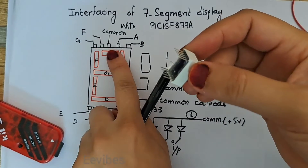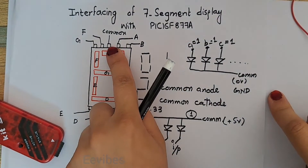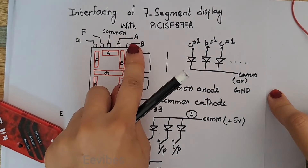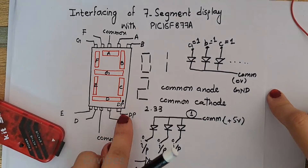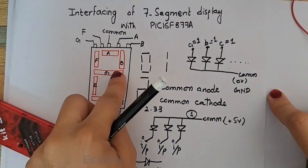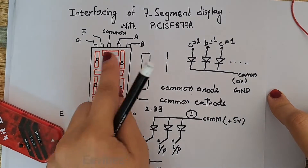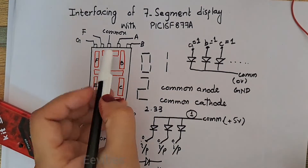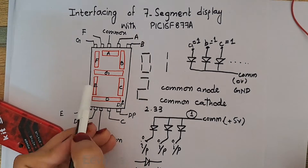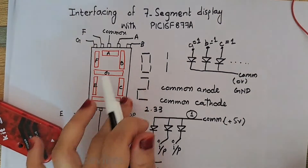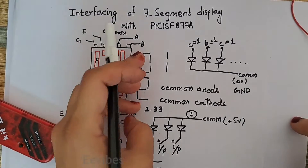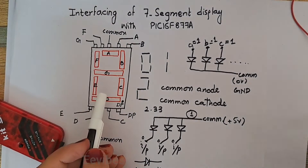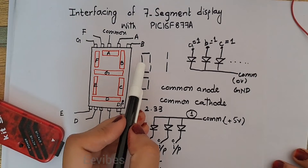The pin configuration shows that the central pin at the top and the bottom is marked as the common pin, while the rest of the pins represent the different LEDs arranged in a specific order for displaying digits. A, B, C, D, E, F, and G are the seven LEDs used for representing any digit on the seven segment display.